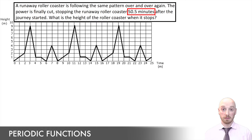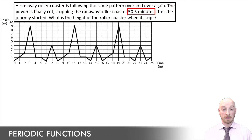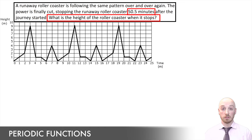For a challenge, they're going to be asking us about a point where this function stops that can't be read off the graph — that would be far too easy. Here we're given that this repeating pattern is going to go on for 50.5 minutes and then come to a stop. What they're asking is what's the height of the rollercoaster at this exact time. Our goal is to figure out how long after the start of a new cycle we are stopping our function.